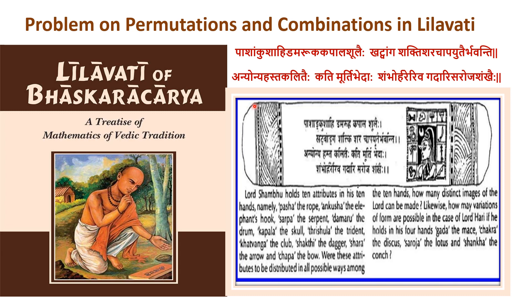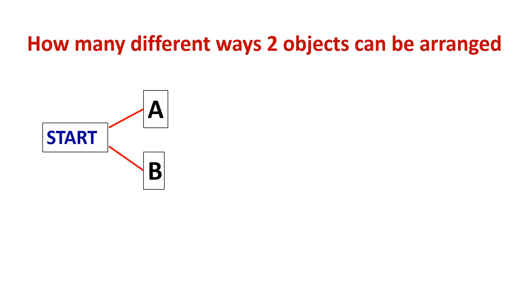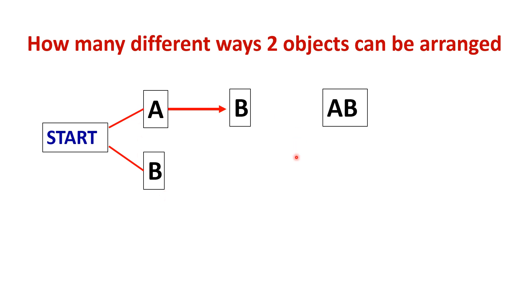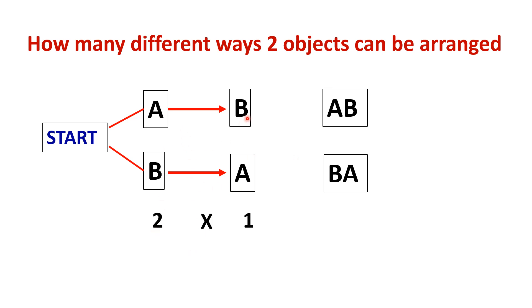Let us see mathematically in how many different ways only two objects can be arranged. Suppose A and B are two objects. Instead of attributes like weapons or tools, we take A and B for clarity. We can arrange them as AB and BA — that means 2 into 1, which is 2 factorial, equals 2 ways.